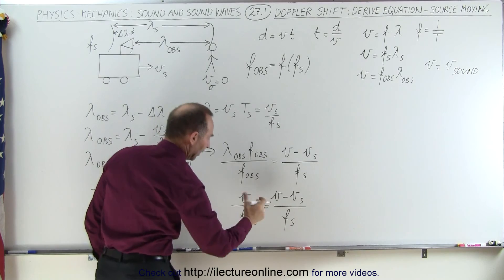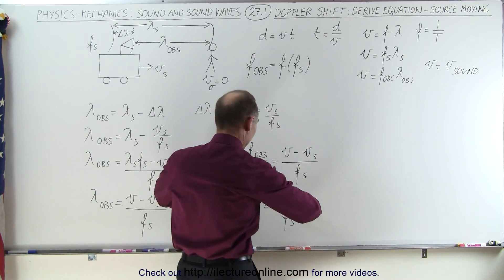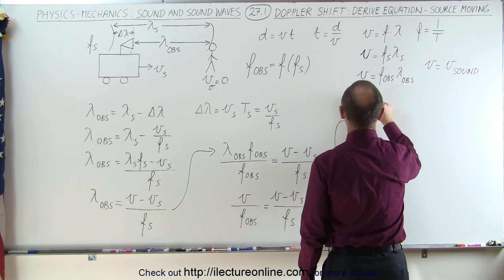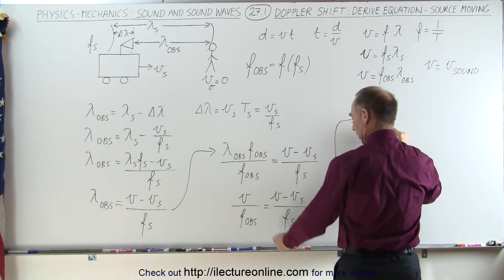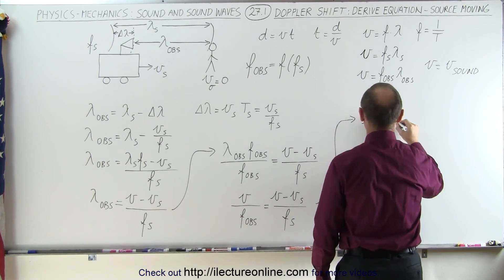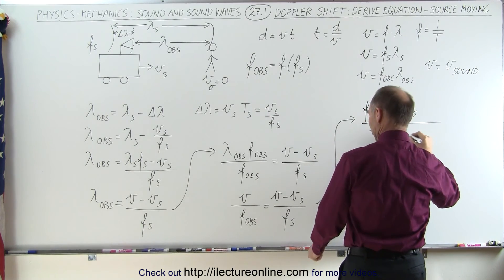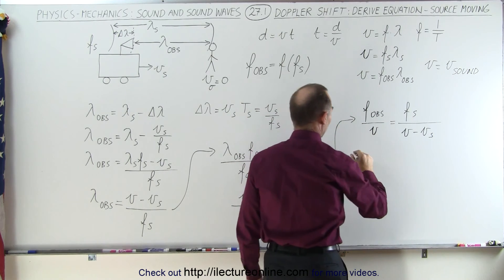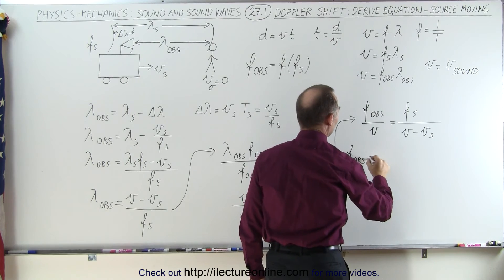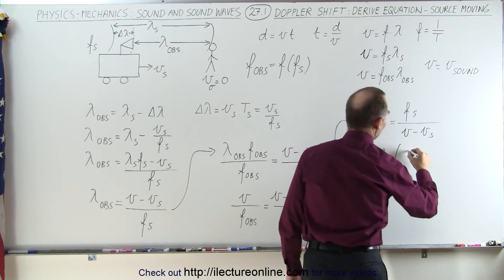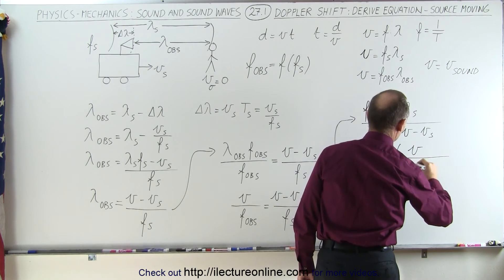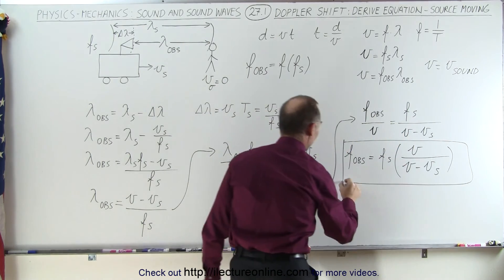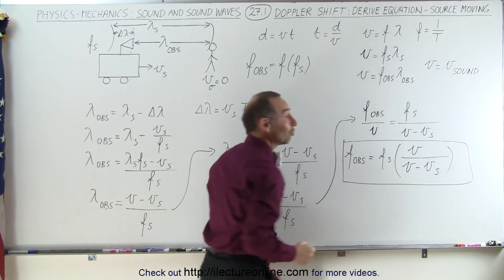We can take the inverse of both sides: F_obs / V = F_s / (V − V_s). Then multiplying both sides by V, we get that the frequency observed equals the frequency of the source times the velocity of sound in air divided by the velocity of sound in air minus the velocity of the source: F_obs = F_s × V / (V − V_s). That is the relationship between the observed frequency and the frequency of the source.